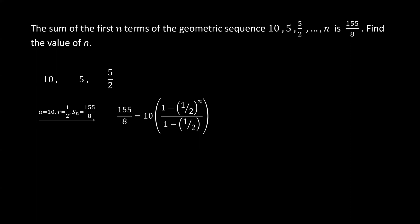To simplify, we divide both sides by 10. We get 155 over 80 equals 1 minus (1/2)^n divided by 1 minus 1/2. The denominator on the right-hand side equals half.